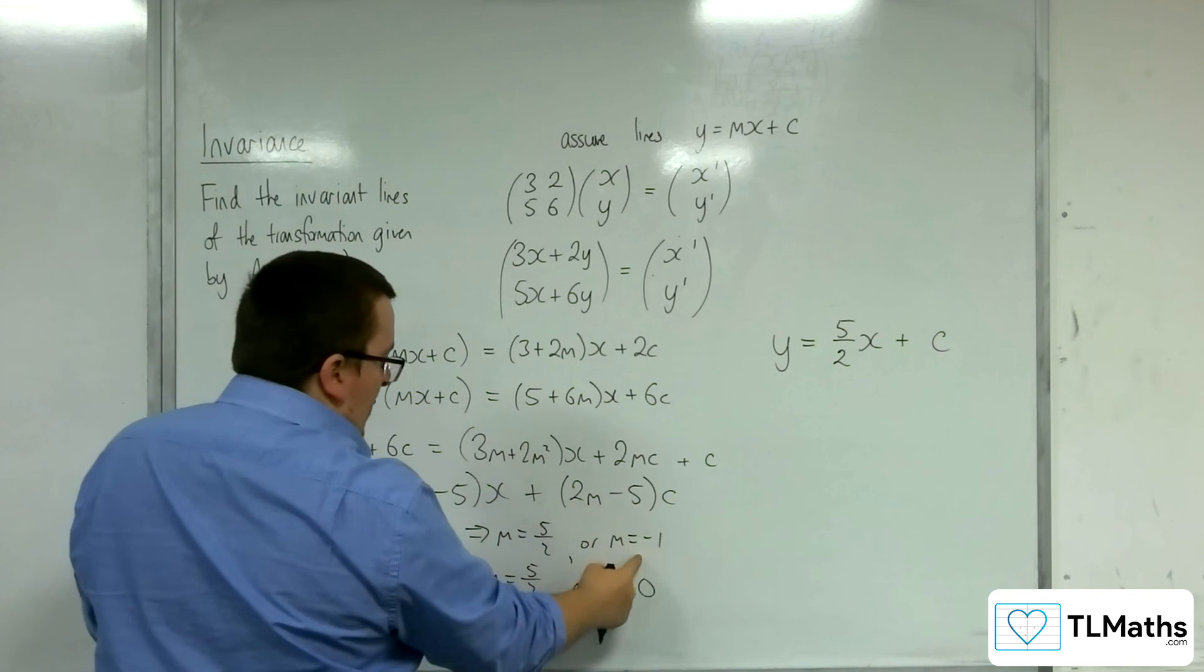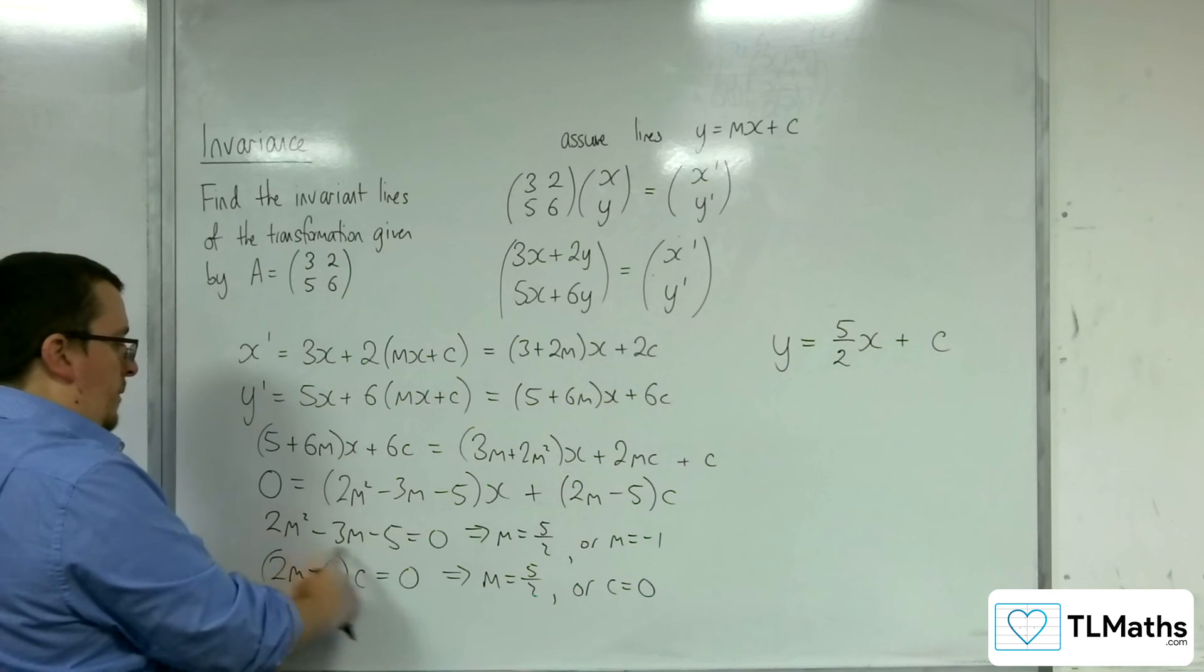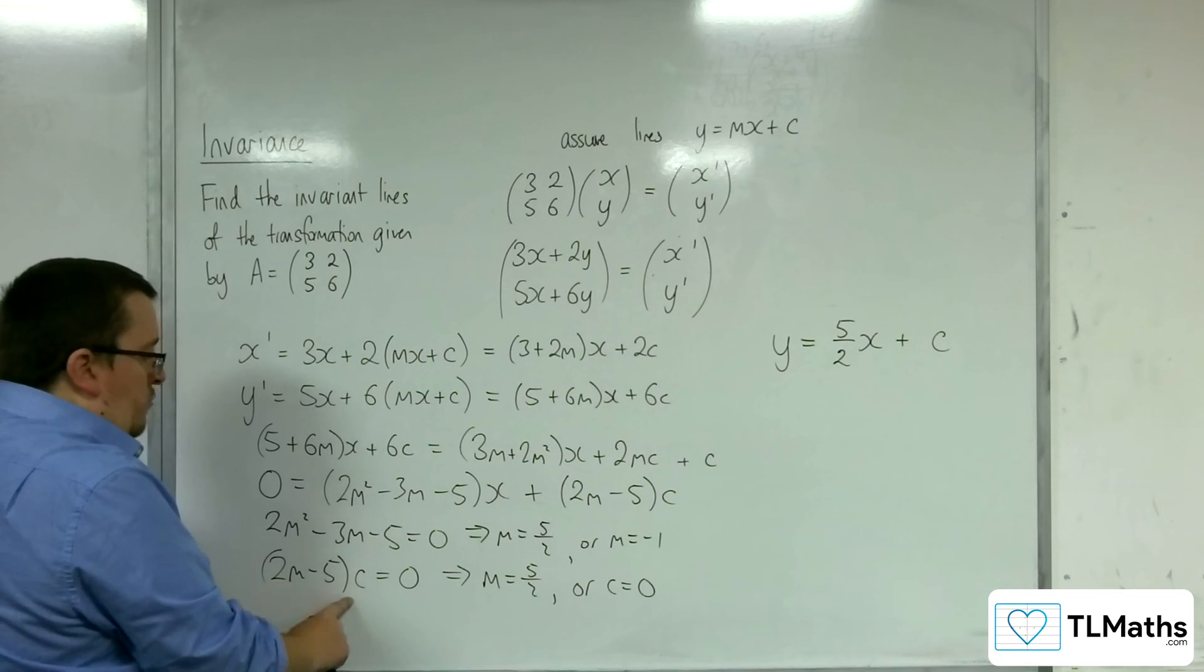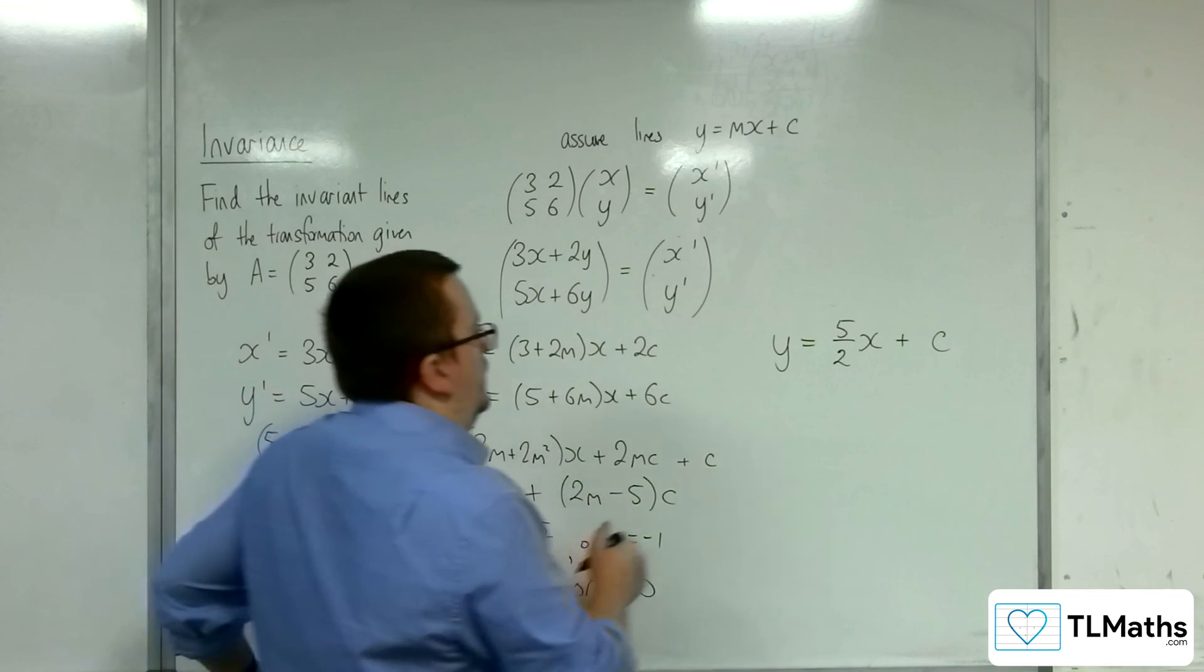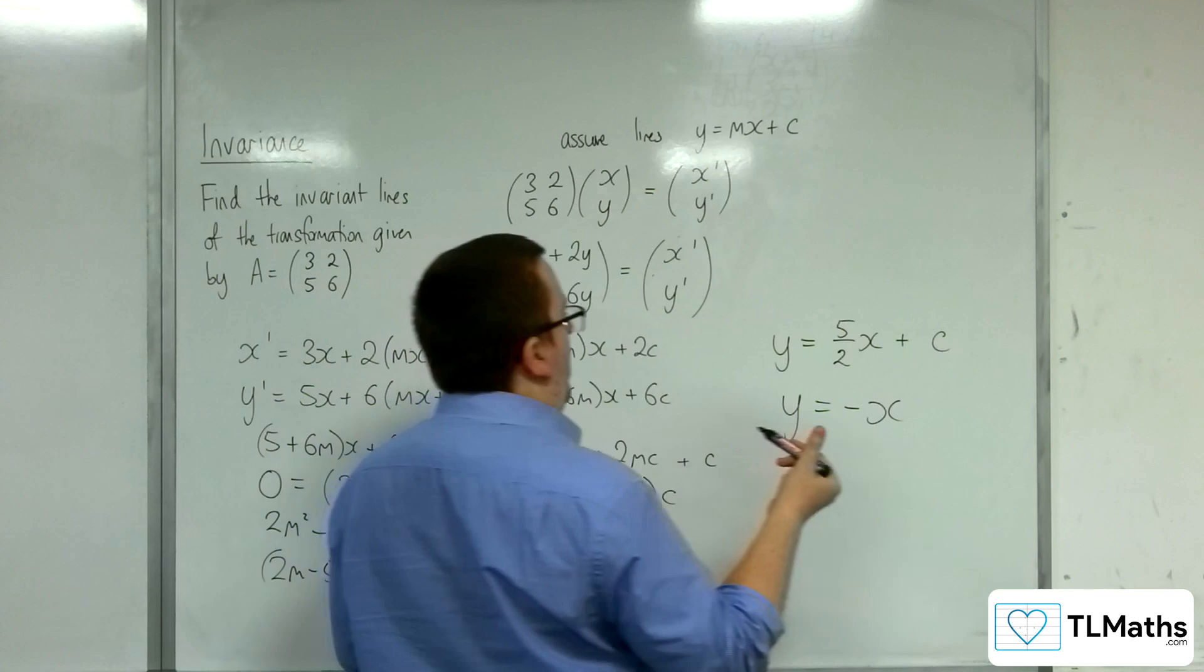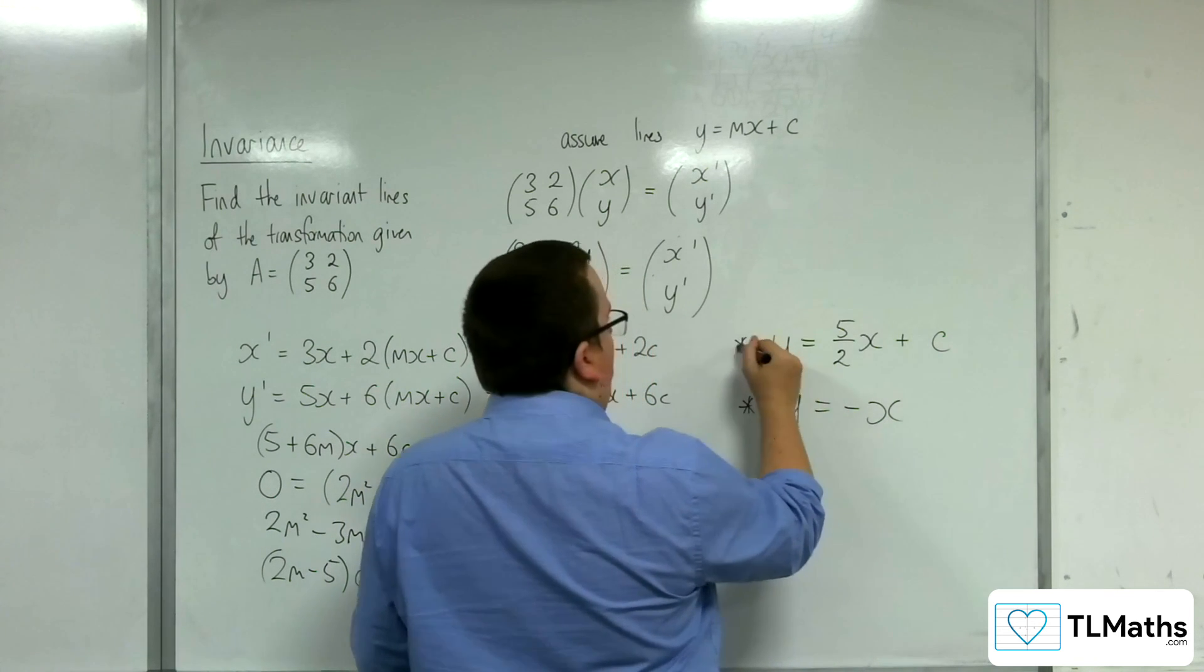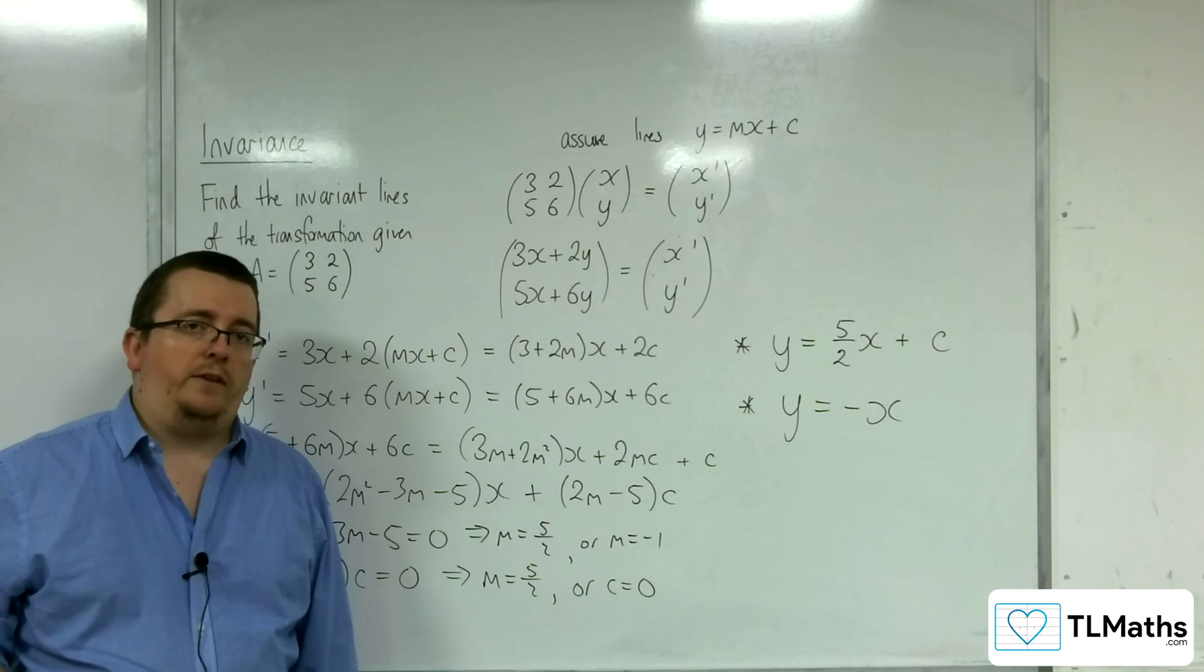So if m is minus 1, then this bracket is 0, well, that bit's 0, this bracket won't be 0. So that means the c would have had to have been 0. So y is equal to minus 1x plus 0 is also an invariant line. So points that start on y equals minus x will remain on y equals minus x.